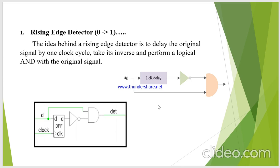We all know that the D flip-flop will delay the given signal by one clock cycle. Here in this circuit, my D flip-flop triggers at the positive edge of the clock and produces Q output with respect to the D input.